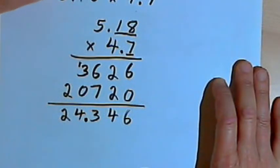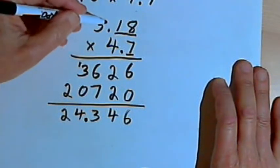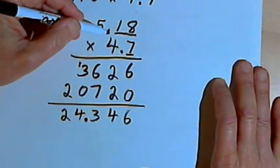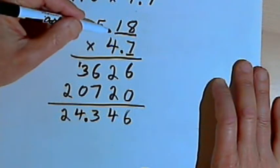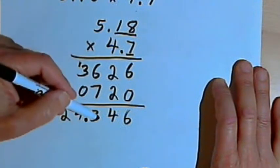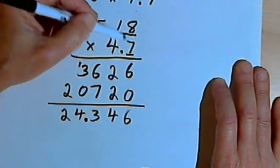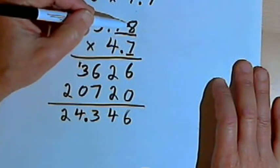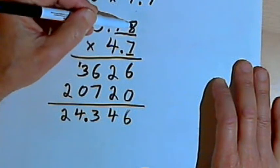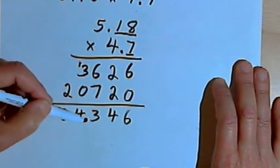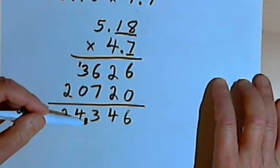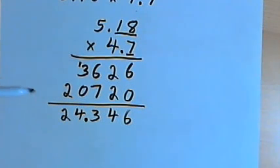So basically you're going to take your problem, set it up as a multiplication problem, don't worry about the decimal points while you're doing the multiplication. At the very end, count how many decimal places you had total in the two numbers you were multiplying. And that's how many decimal places you'll have in your answer. That's all there is to it. Take care and I'll see you next time.